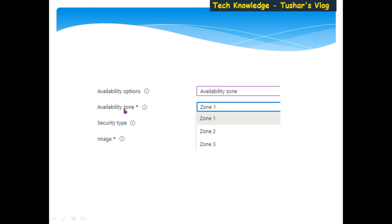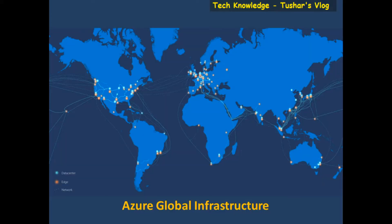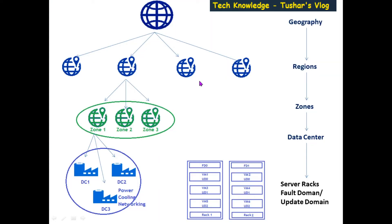When you select availability zone, it asks you to choose zone 1, zone 2, or zone 3. Let me explain the global infrastructure of Azure. We have multiple data centers spread across the world — plenty in the US, a lot in UK and Europe, and some in Asia. This is how the level of data centers spans the complete globe. As per Microsoft, there are 54 regions as of today.